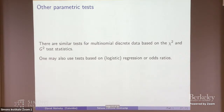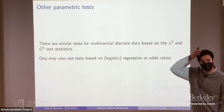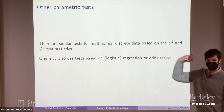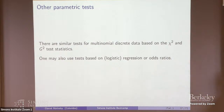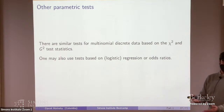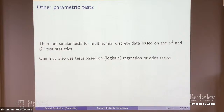There are similar tests for multinomial discrete data using a chi-squared test statistic or the G-squared test statistic. For parametric families you can also use tests based on logistic regression coefficients or odds ratios.